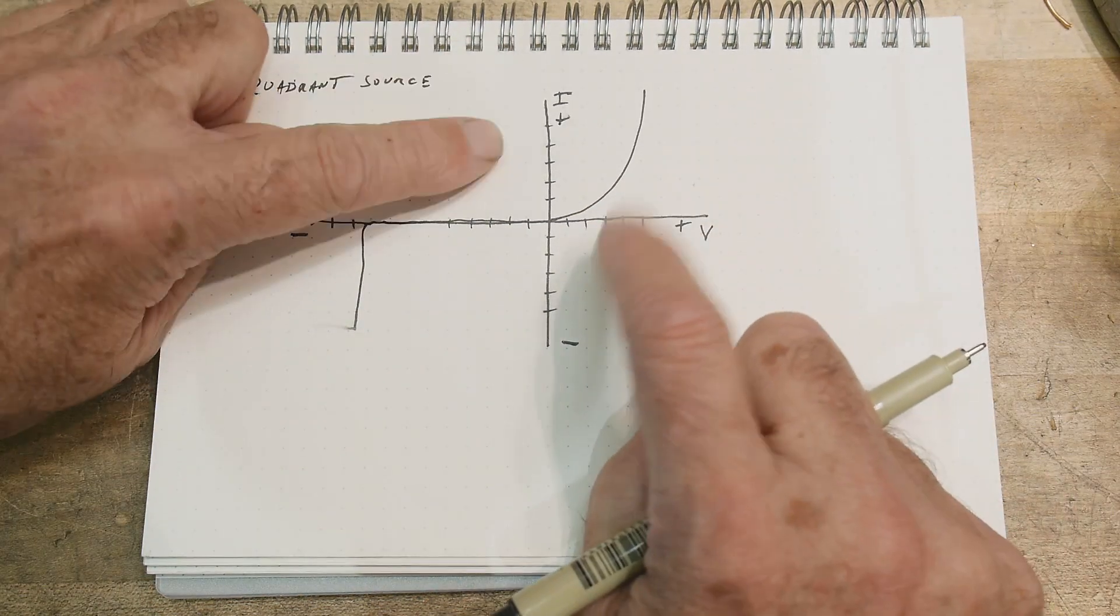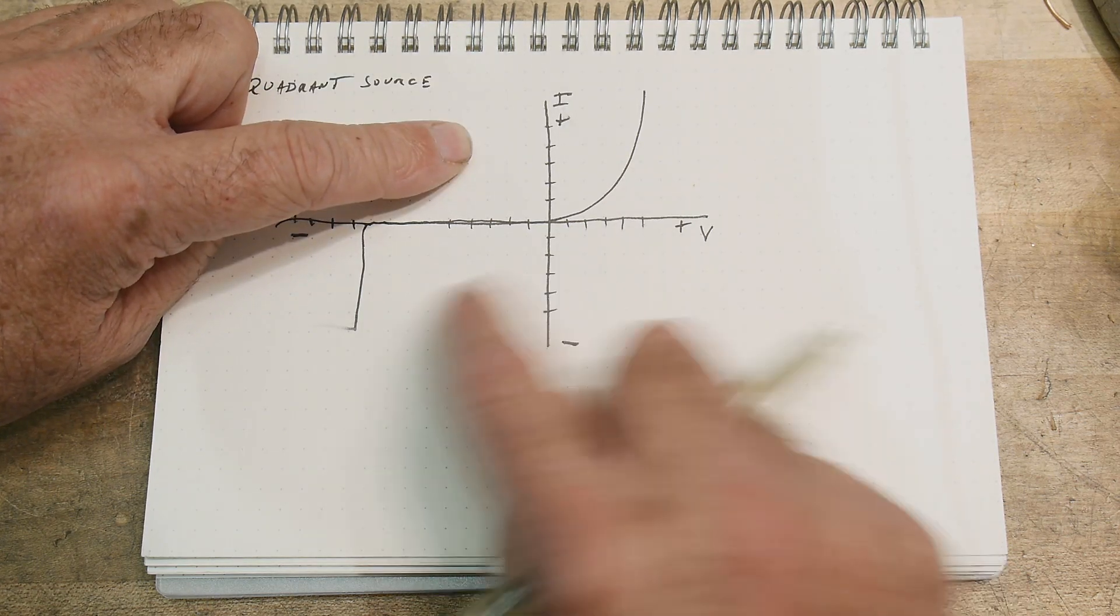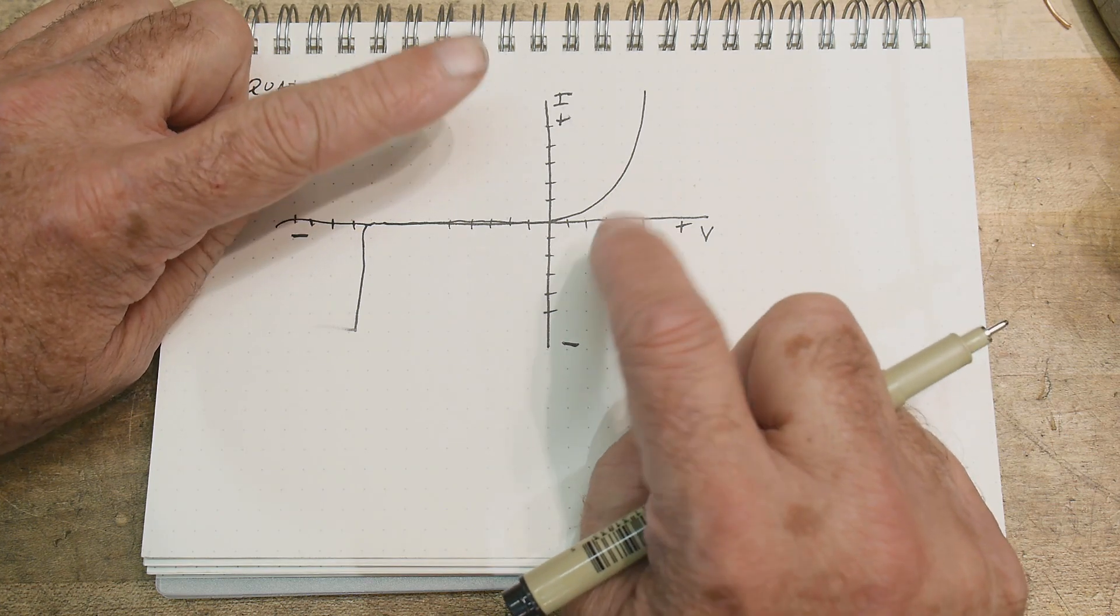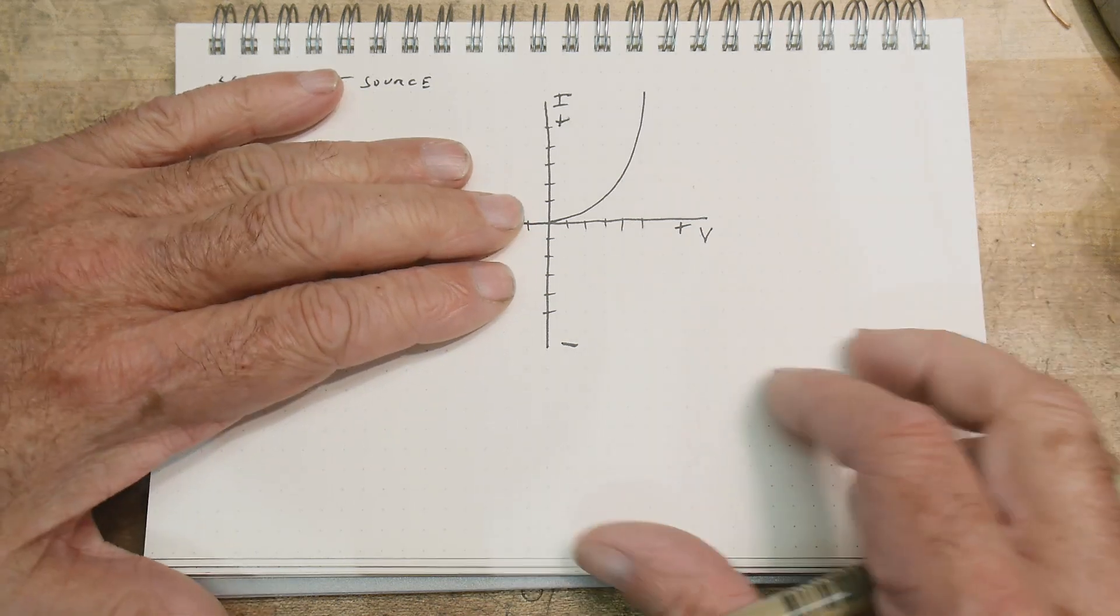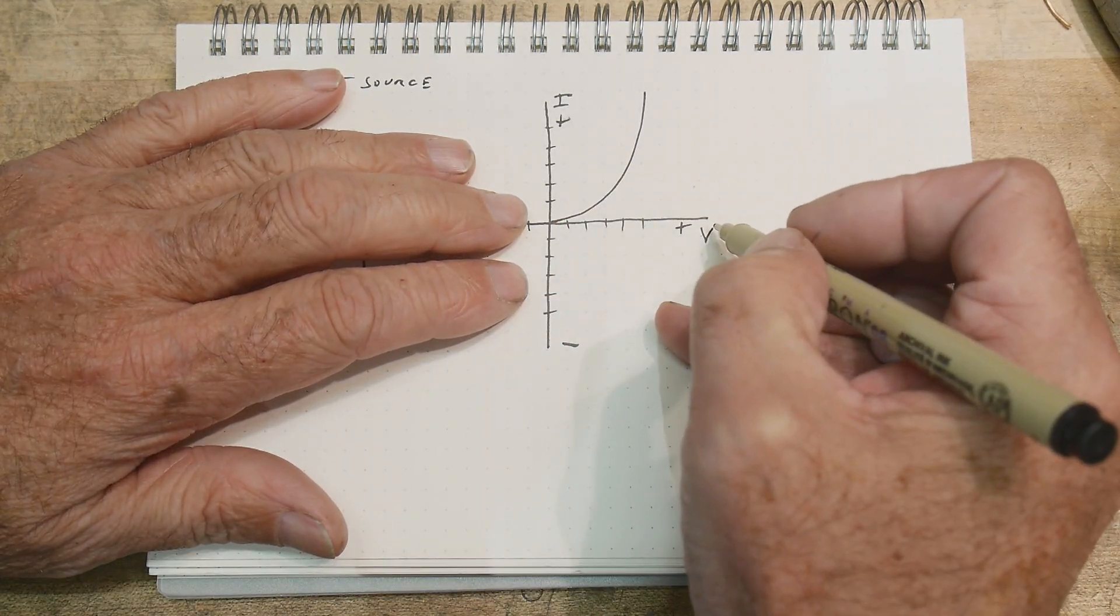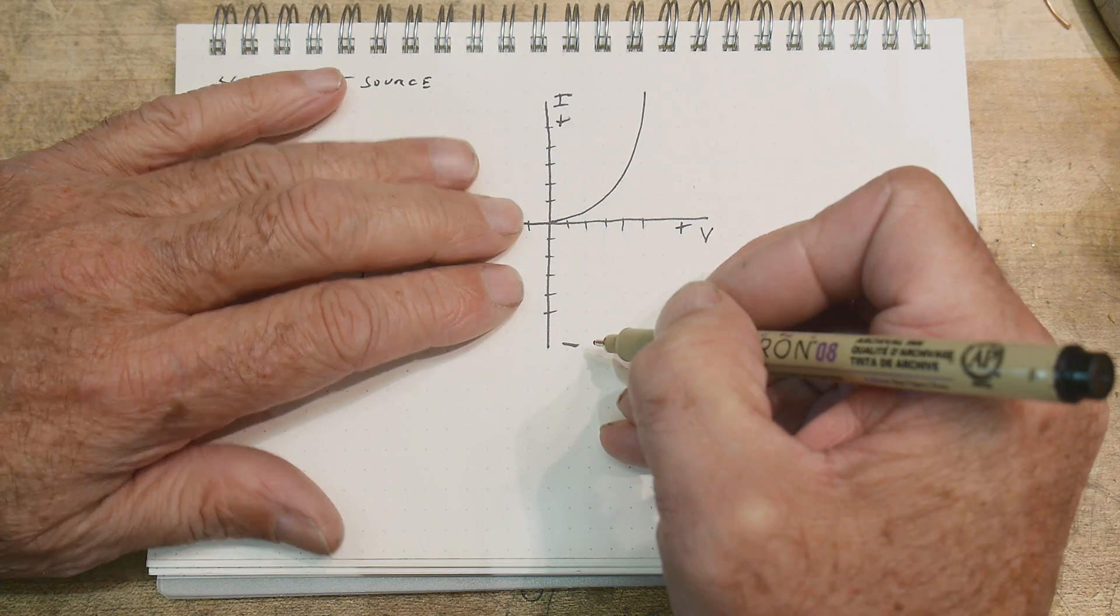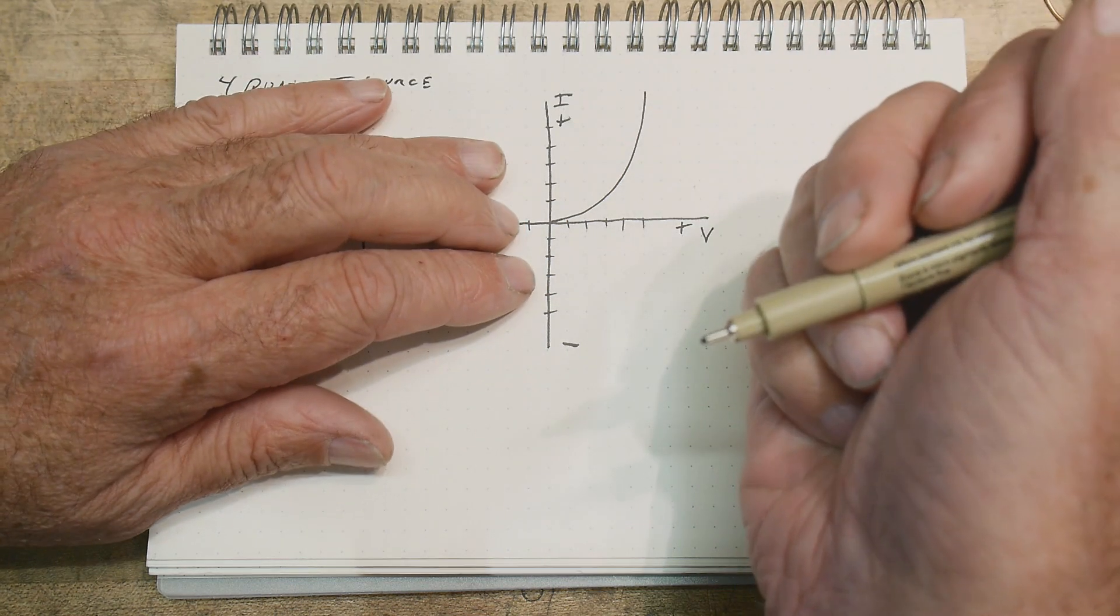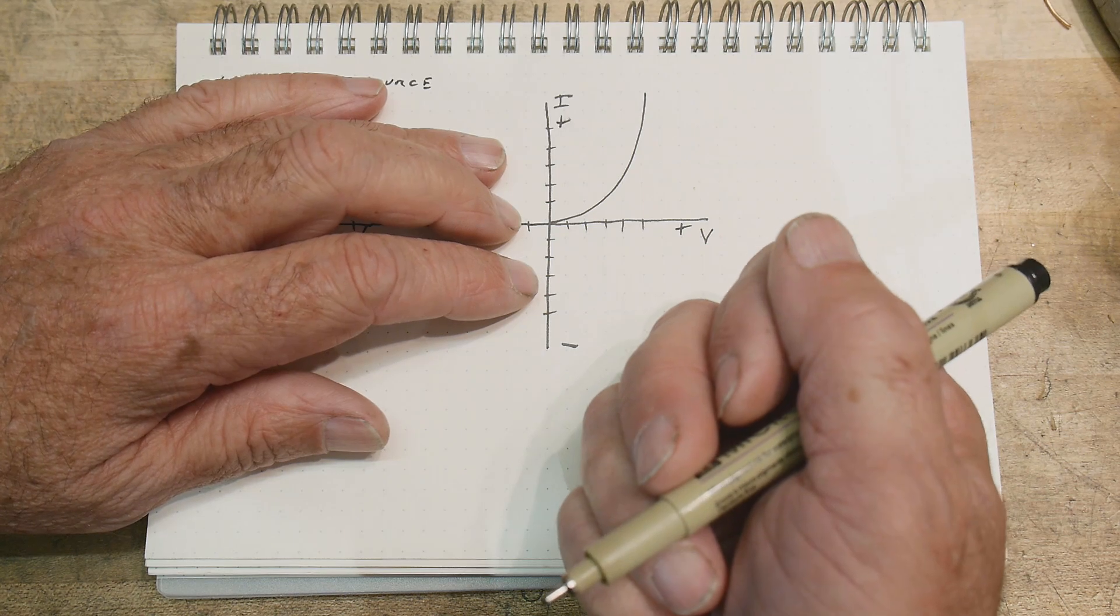So what about these two? Have you ever used these two? You've probably seen lots of graphs, but I bet you've never seen anything up here or anything down here. What does that mean? So let's talk about this quadrant here. We're going to have positive voltages but negative current. What does that mean? It means that we are going to be, instead of giving current, we're going to be taking current.